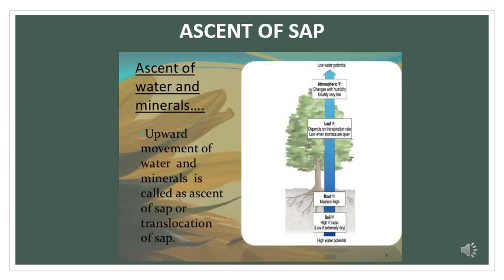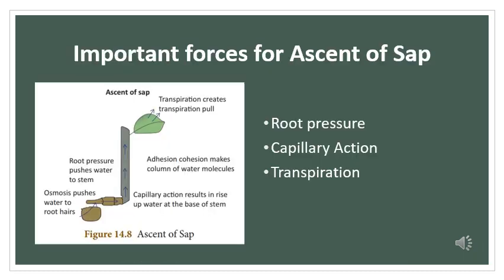Water and absorbed minerals are transported in the form of sap. The sap moves in an upward direction against the gravity to reach the leaves of the plants. This upward movement of sap from the root to the crown of the plant is called ascent of sap or translocation of sap. Ascent of sap takes place through complex tissue xylem.